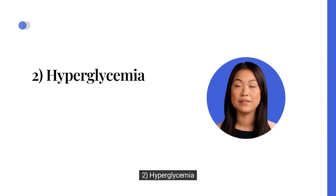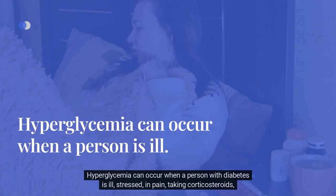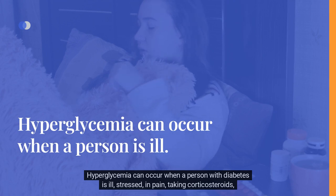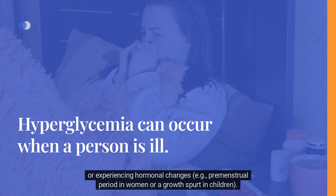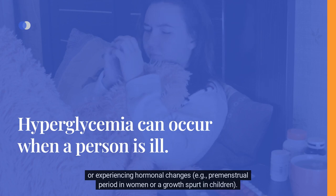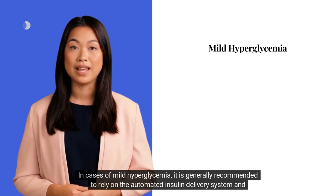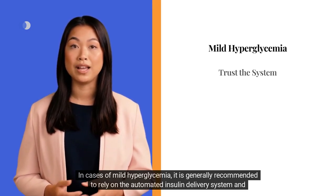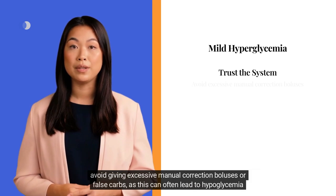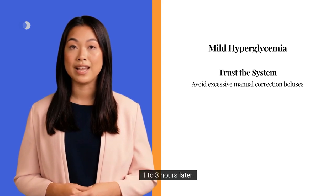2. Hyperglycemia. Hyperglycemia can occur when a person with diabetes is ill, stressed, in pain, taking corticosteroids, or experiencing hormonal changes — for example, the premenstrual period in women or a growth spurt in children. In cases of mild hyperglycemia, it is generally recommended to rely on the automated insulin delivery system and avoid giving excessive manual correction boluses or false carbs, as this can often lead to hypoglycemia 1 to 3 hours later.